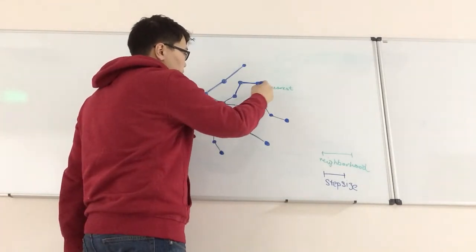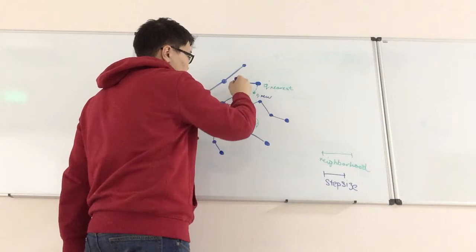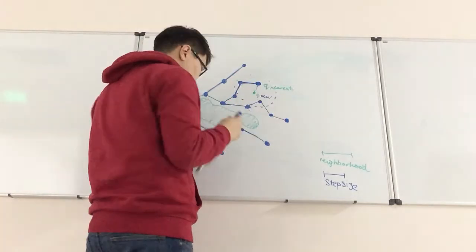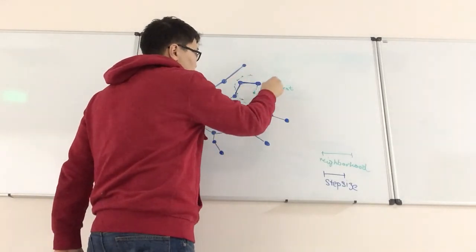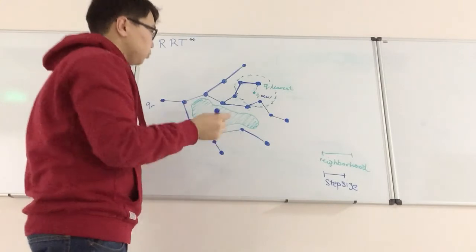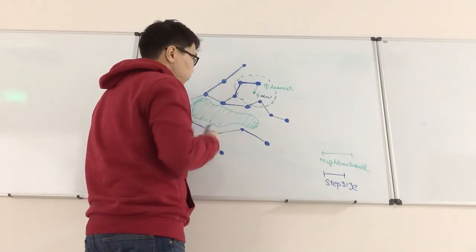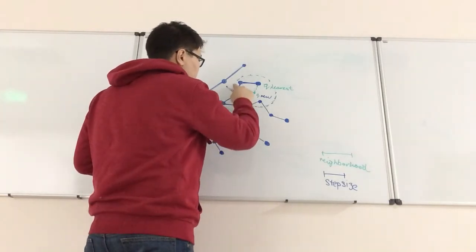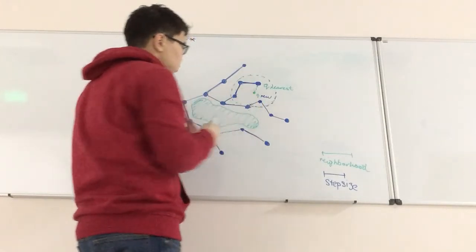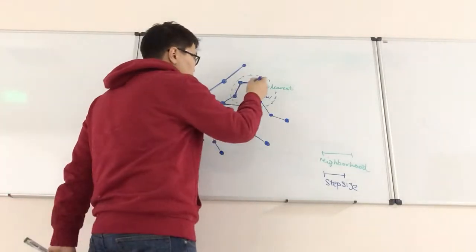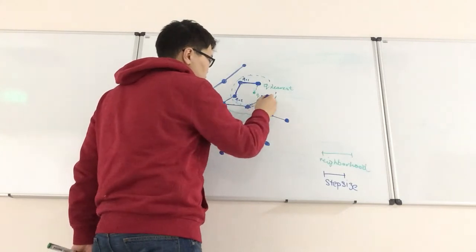Okay, we will look in the vicinity of this Q_new — for example, it will be like this. Now we have neighbors of this node. We will enumerate them: this will be QN1, QN2, and QN3.